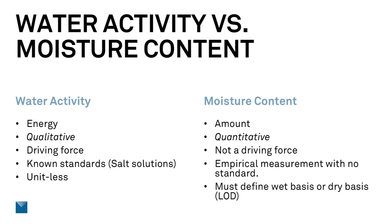Comparing water activity and moisture content: water activity is the energy of the water in a system; for moisture content we're talking about the amount. Water activity is a qualitative measurement — defined by the product itself and the interactions of the water inside the product. Moisture content is quantitative — you get a number. Water activity is a driving force based on the principles of thermodynamics. Moisture content is not a driving force; it does affect texture, but is not a driving force for reactions and changes in a product.